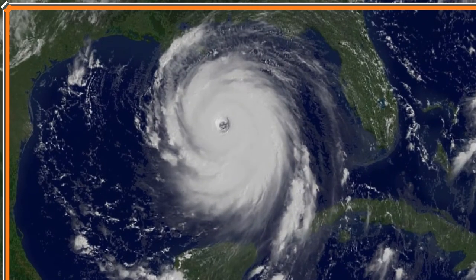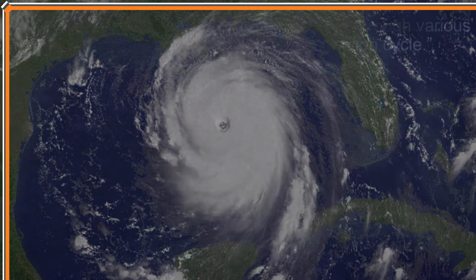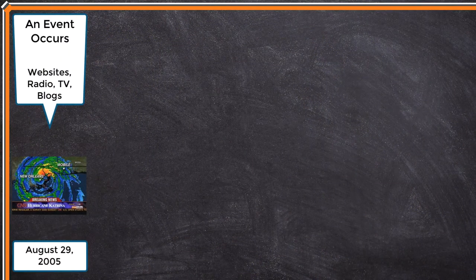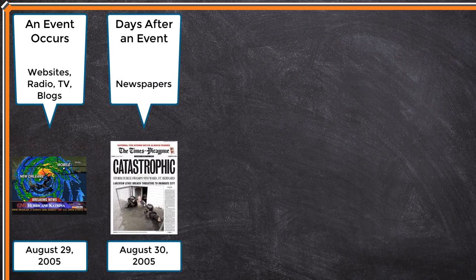Let's look at the information cycle using Hurricane Katrina as an example. When an event happens, the first publications with information about it are websites, as well as television and radio programs. Newspaper articles are published soon after. At this point, information known about the event is probably limited. Details may still need to be confirmed, information may be sketchy, and more time might be needed to understand the causes and impacts of the event.